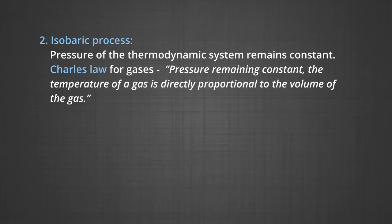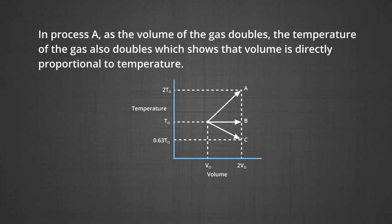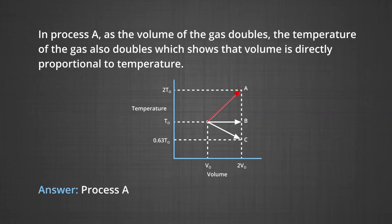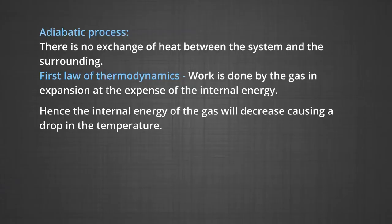According to Charles' Law, with pressure remaining constant, temperature is directly proportional to volume. In process A, as the volume of the gas doubles, the temperature also doubles, showing that volume is directly proportional to temperature. So the answer for the isobaric process is process A. The third one is the adiabatic process.